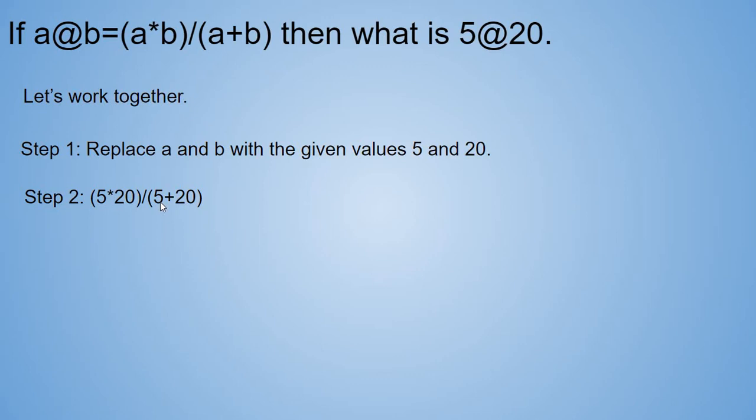Okay, a few things to note here. Order of operation rules. The parenthesis, or brackets, are around 5 times 20 and 5 plus 20. So before we divide, we're going to do the equation in the brackets first. So that gives us 5 times 20 is 100 and 5 plus 20 is 25.